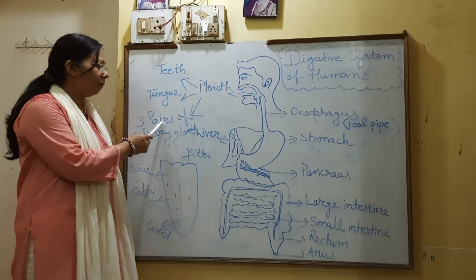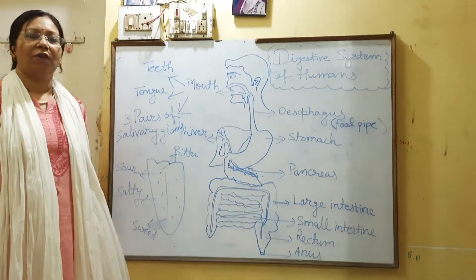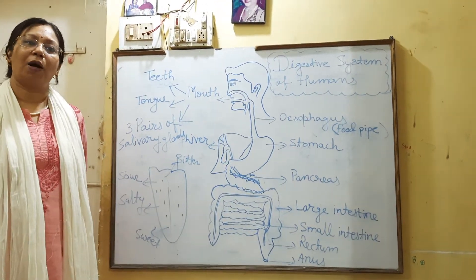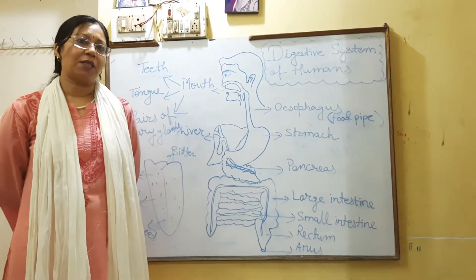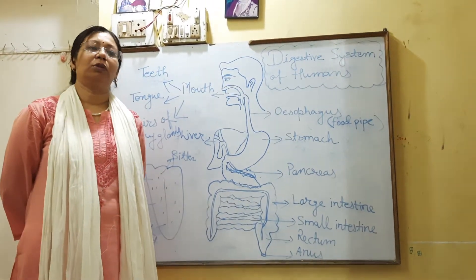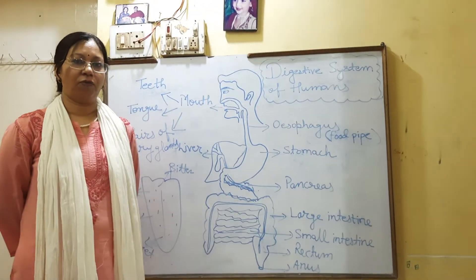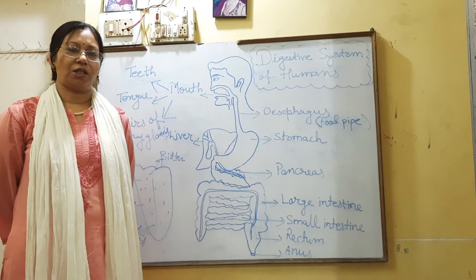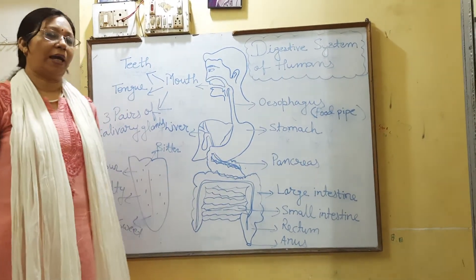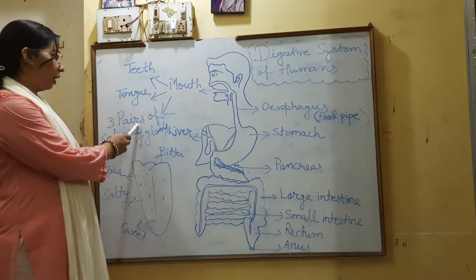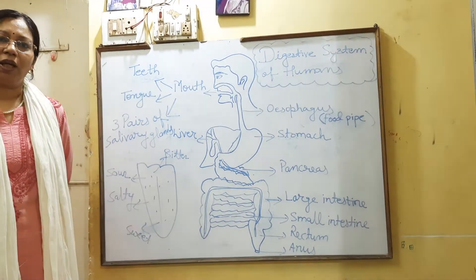Three pairs of salivary glands secrete saliva which keeps our mouth moist all the time. Not only does it keep our mouth moist, but it also helps in digestion of starch. Starch is converted into soluble sugar by the help of the saliva secreted by the three pairs of salivary glands.